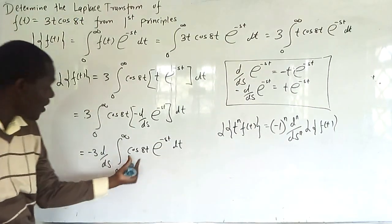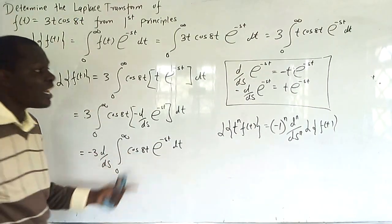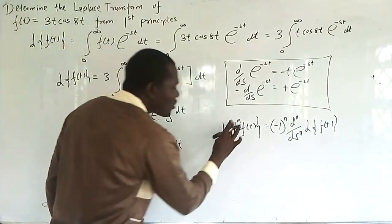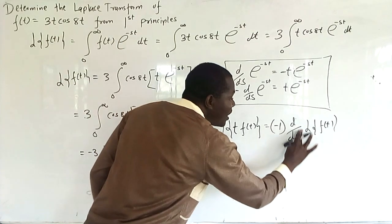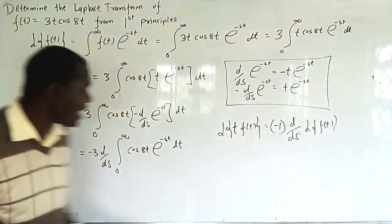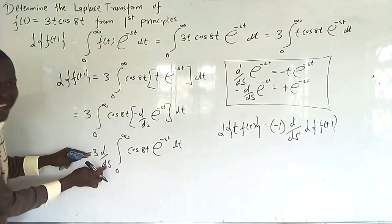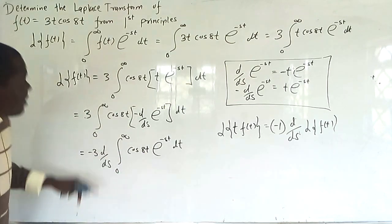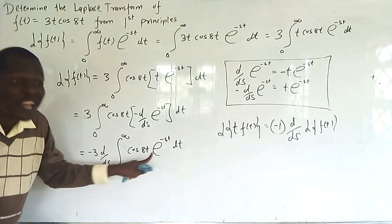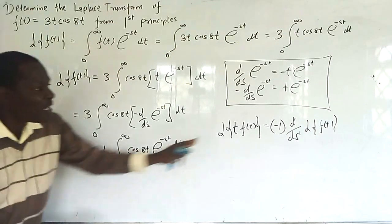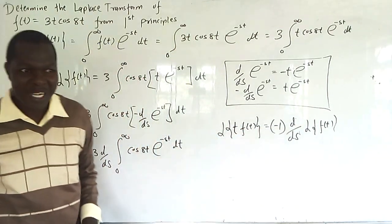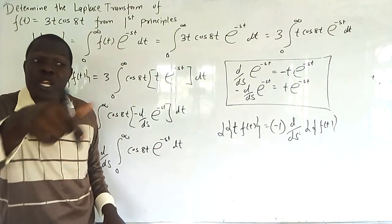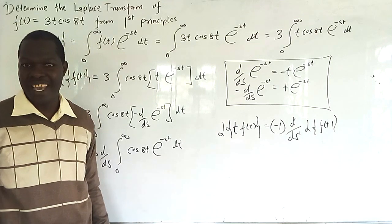Taking cosh(t) to be our f(t), and since we had just one t, n = 1. That gives us -1·d/ds. We have eliminated t by -d/ds, and 3·cosh(t) remains inside. The idea is to eliminate that t using the shift theorem.